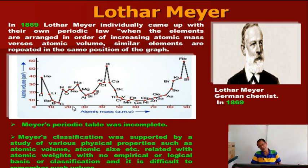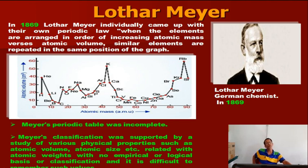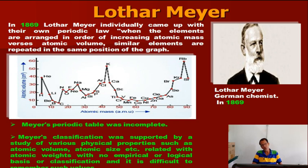This showed that if elements are arranged in increasing atomic mass, periodic properties like atomic volume and atomic size follow a pattern. He plotted different properties against atomic mass. However, his arrangement faced problems — the table was incomplete. He supported the study of various physical properties such as atomic volume and atomic size related to atomic weights. Different behaviors were noticed when different properties were considered with atomic mass, so this law was not accepted by modern scientists.